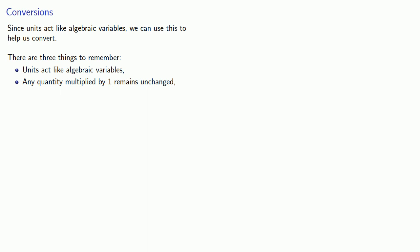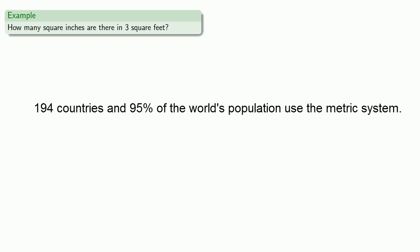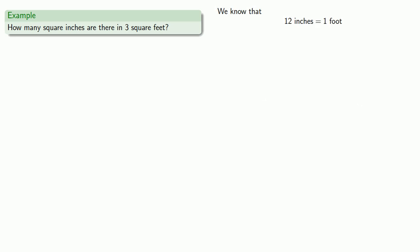Another useful application appears in conversions. Since units act like algebraic variables, we can use this approach to help us convert from one unit to another. And there are three things to remember. First, units act like algebraic variables. Next, any quantity multiplied by one remains unchanged. And finally, one is any quantity divided by its equal. For example, suppose we want to know how many square inches there are in three square feet. So for that, we need to know the relationship between these units. Now, for the people who live in 194 countries, and for 95% of the world's population, you'll need to know that 12 inches are the same as one foot. Now, if you happen to live in that one holdout country, and that small percentage of the world's population that refuses to learn the metric system, these are some of the things that you learn in school. Well, time spent that you could be learning other stuff. But I digress.